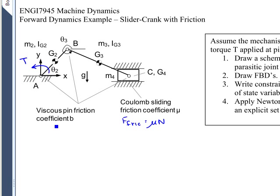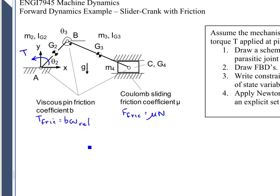Now the viscous pin friction, viscous friction is going to give us a friction torque T fric which is going to be B times omega rel, the relative angular velocity of the joint. And how we define that is going to be important. And in both cases these friction forces are opposing the motion.